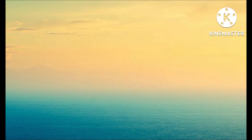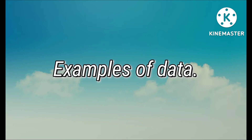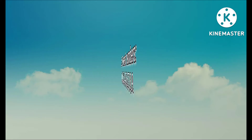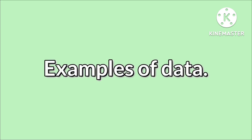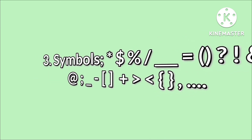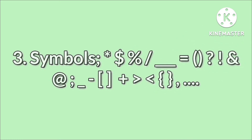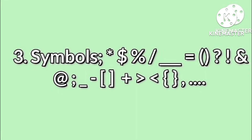Data also contains numeric numbers such as zero, one, two, three, four, five, six, seven, eight, and nine. In data we also have symbols like asterisk, dollar, percent, slash, dash, equals, brackets, question mark, and exclamation mark, among others.